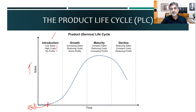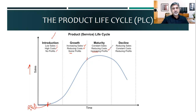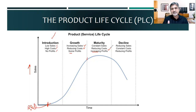Then sales start increasing — we call it the growth phase. In growth, sales are increasing, costs are reducing, and some profits are there, though you promote and advertise a lot and spend a lot. Then comes maturity, where you have maximum profits because sales have become constant and costs start going down due to higher volumes and economies of scale. Your production cost and advertisement cost go down because the product has established itself in the market, people know the product, and your investment on the project becomes less. Profits are maximum in this period.